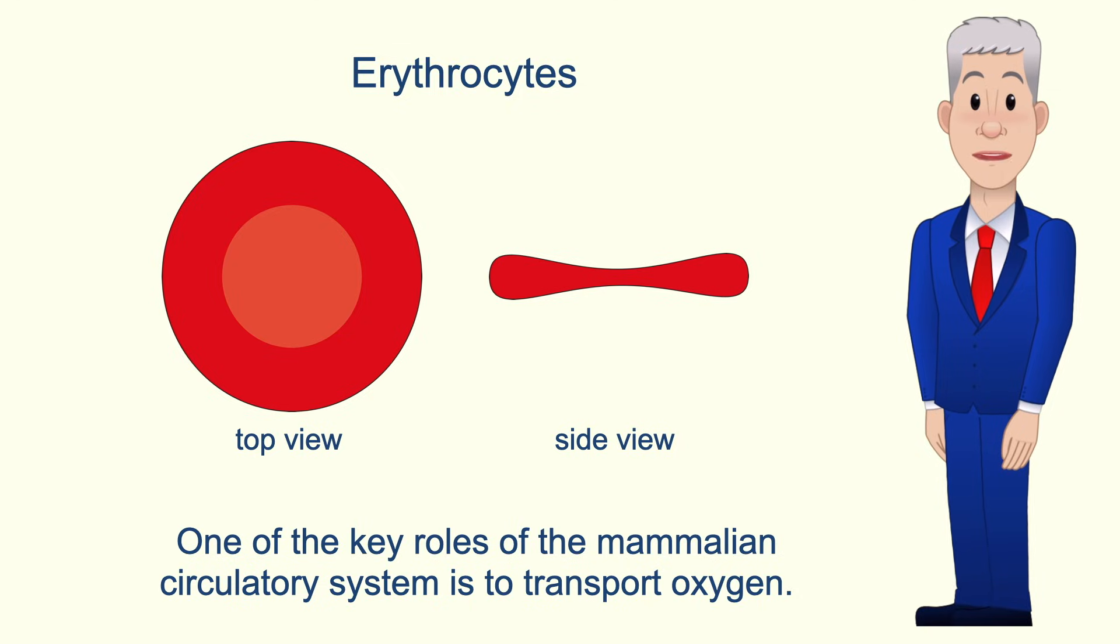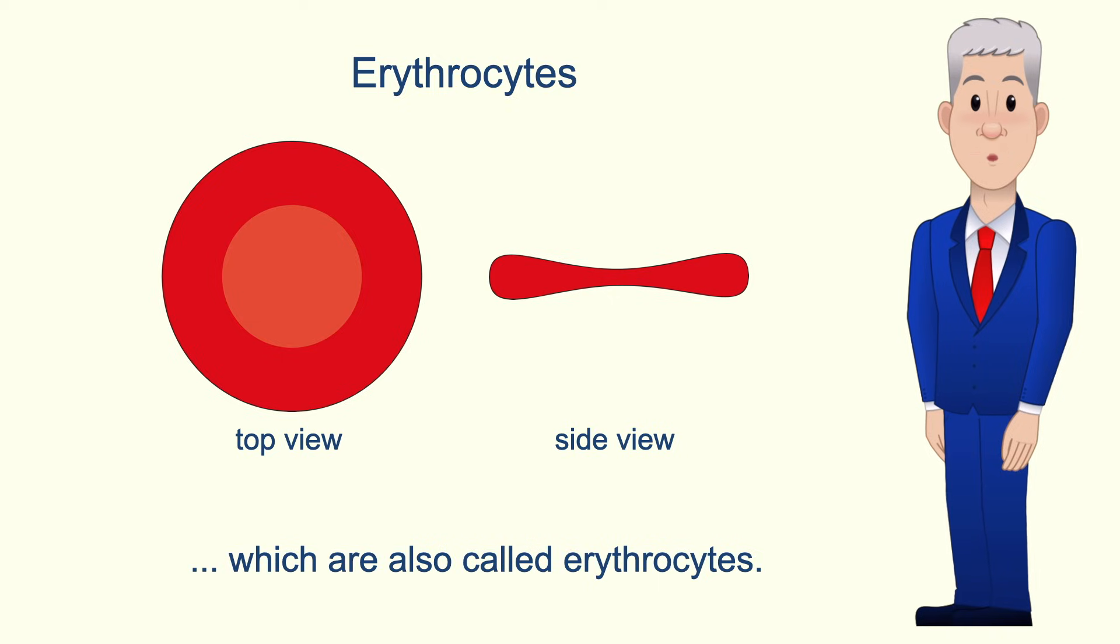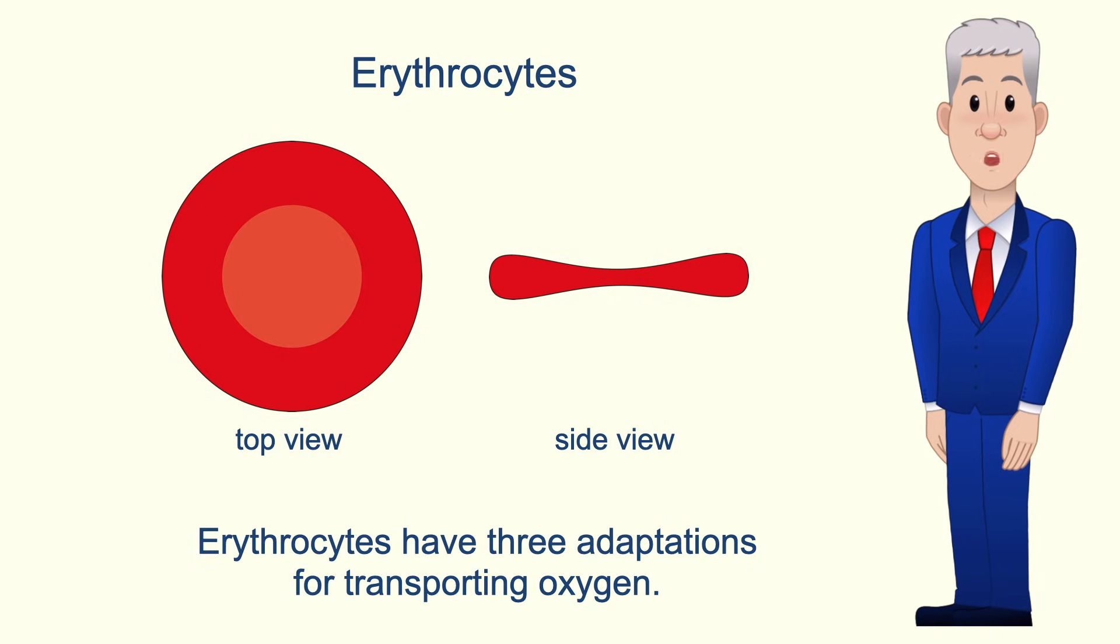Now one of the key roles of the mammalian circulatory system is to transport oxygen. The vast majority of oxygen transported by the blood is carried in red blood cells which are also called erythrocytes. Erythrocytes have three adaptations for transporting oxygen.